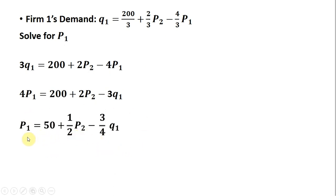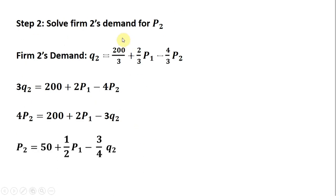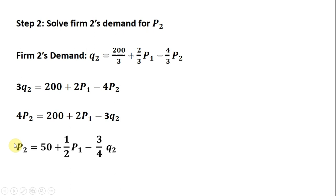We're not done — we want Firm 1's inverse demand as just a function of its output and the other firm's output, so we're not there yet. Step 2: we're going to do the same thing but this time solve Firm 2's demand for P₂ — the identical steps from the perspective of Firm 2. Multiplying everything through by 3, moving things around, and dividing by 4. This essentially becomes a mirror image of the price equation we found in Step 1.